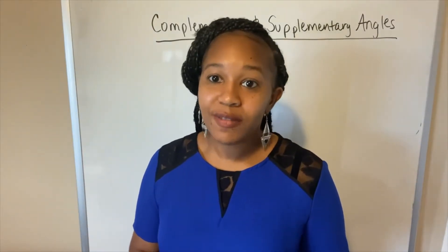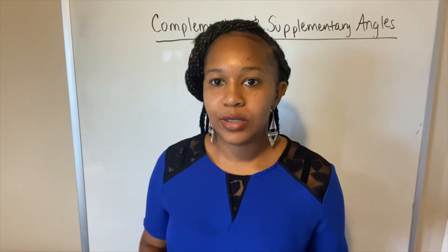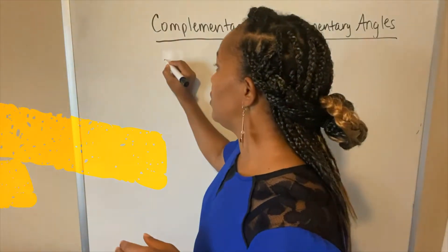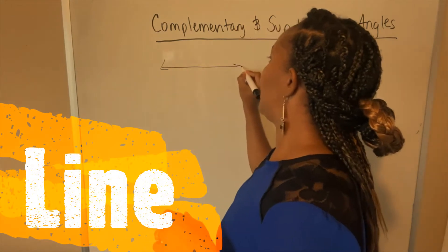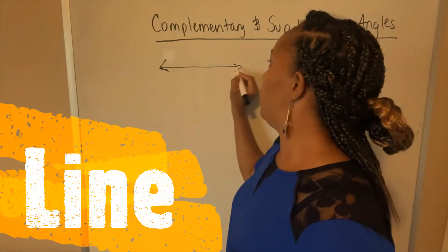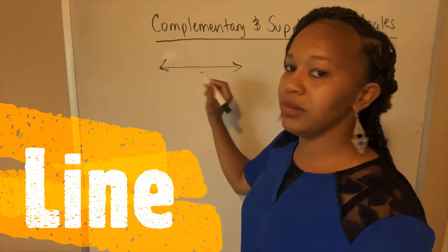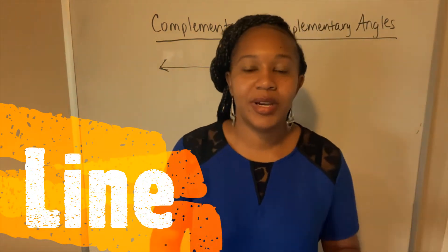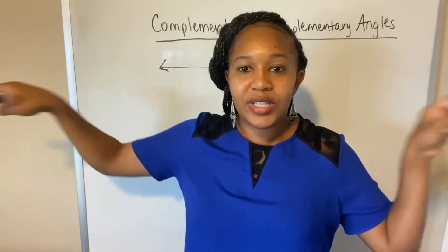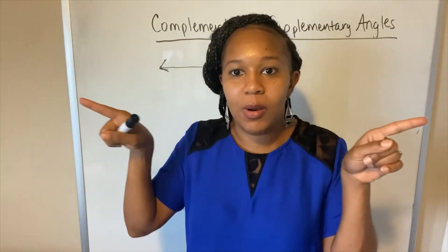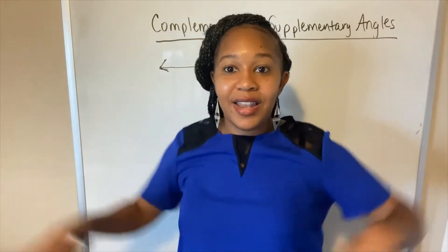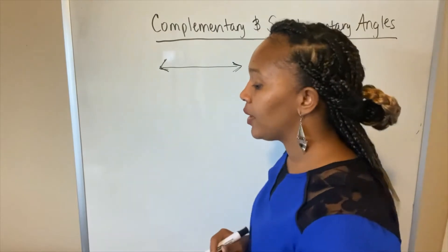The first term is a line. A line extends in both directions — that's what the arrows mean. It keeps going and going and going like the Energizer Bunny. It doesn't stop. So a line extends in both directions; it just keeps going. That's a line.